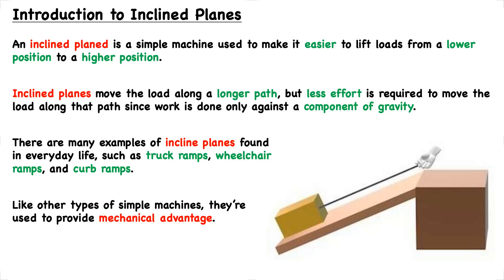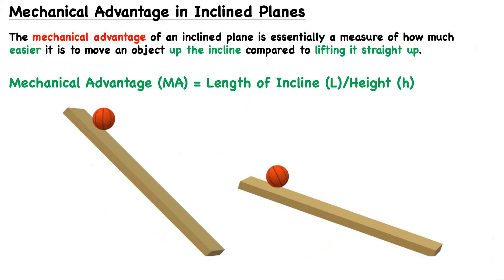For this reason, inclined planes are a very useful simple machine, and there are many examples found in everyday life, with some common examples including truck ramps, wheelchair ramps, and curb ramps. You can see many examples of inclined planes in real life are typically called a ramp of some kind. Like other types of simple machines, they're used to provide mechanical advantage. The mechanical advantage of an inclined plane is essentially a measure of how much easier it is to move an object up the inclined plane compared to lifting it straight up, and we can express this with the following expression.